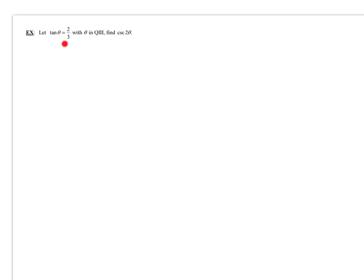In this problem, I know that the tangent of theta is two-thirds, and theta is in quadrant three. I need to find the cosecant of two-theta.